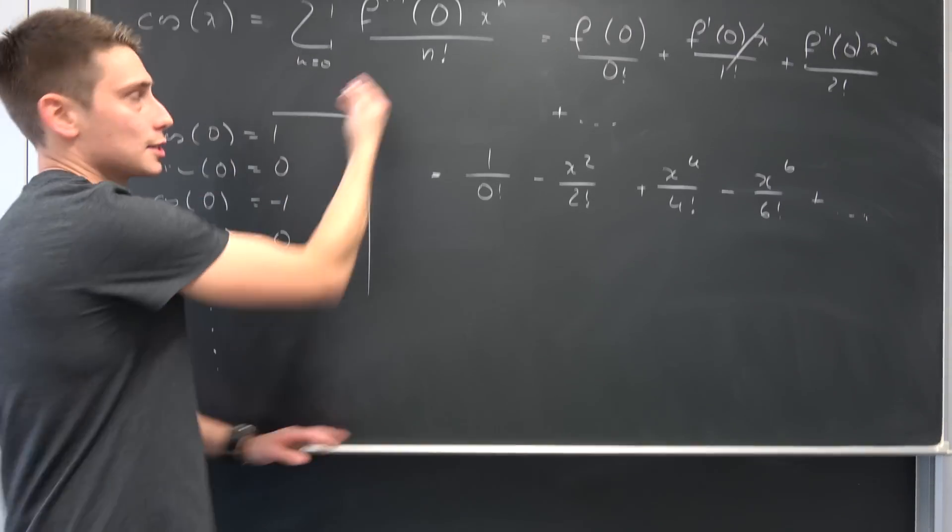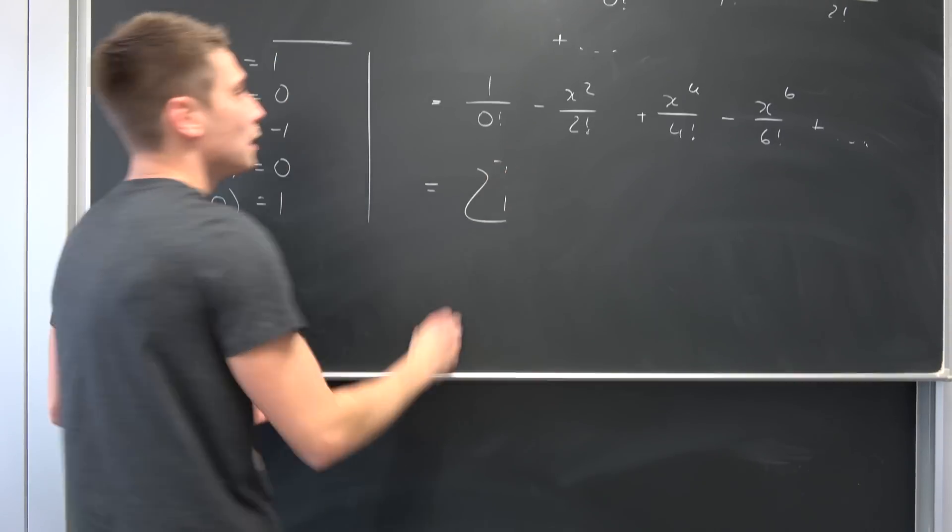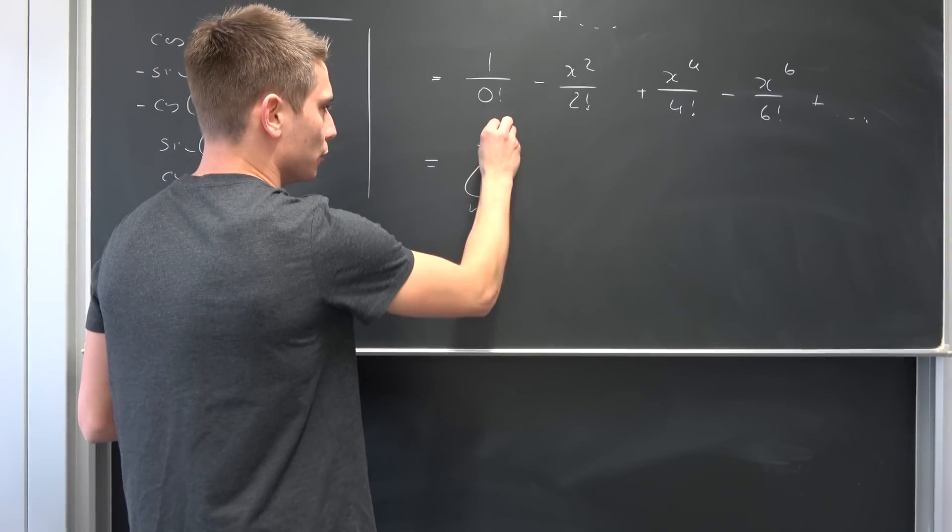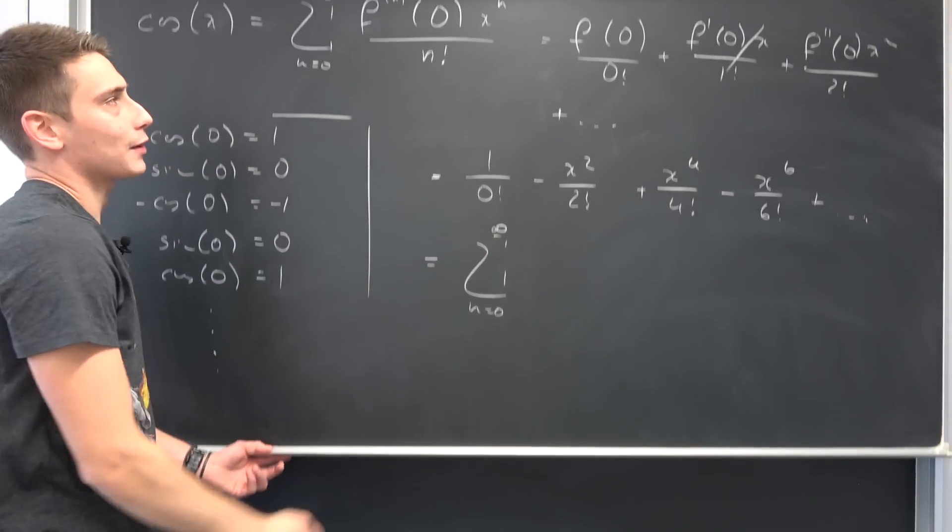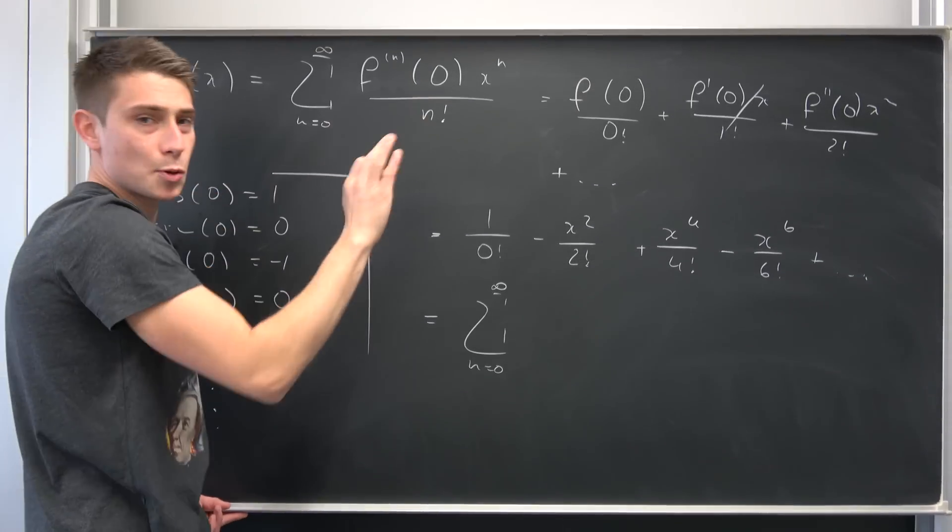So how can we put this into this sum notation up here? Well basically this is just an infinite sum. We are going to start at zero. So n equals zero to infinity of, okay at first. Well this is just, well let's put the x at first.